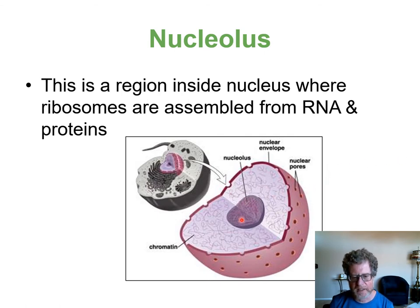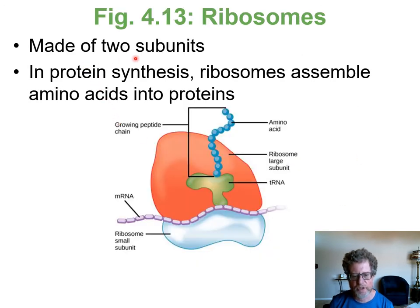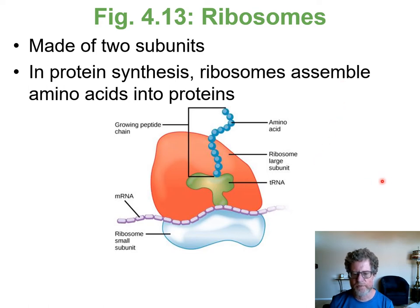The nucleolus is a region in the middle of the nucleus where ribosomes are made and assembled. Ribosomes are the site of protein synthesis — they move out through the nuclear pore, are assembled in the cytoplasm, and help cells synthesize proteins. A ribosome is made of two subunits that come together around a piece of mRNA and build a protein one amino acid at a time. All cells — whether eukaryotes or prokaryotes — have ribosomes made of two subunits.